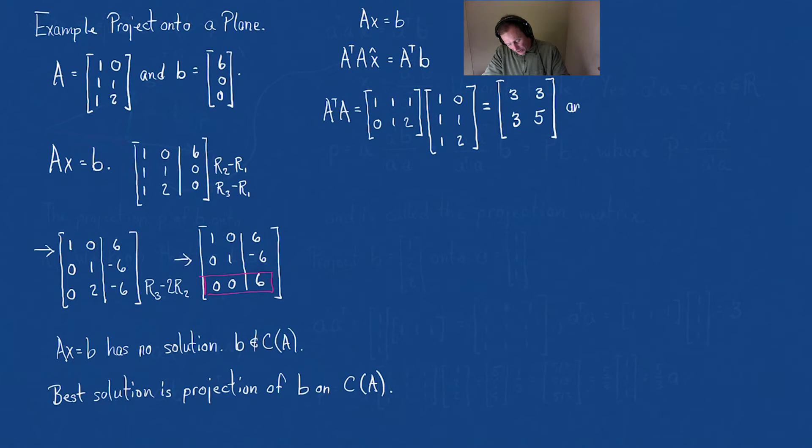And we need A transpose B. That's going to be [1,1,1; 0,1,2] times [6,0,0]. What does that give me? That's going to give me [6; 0].